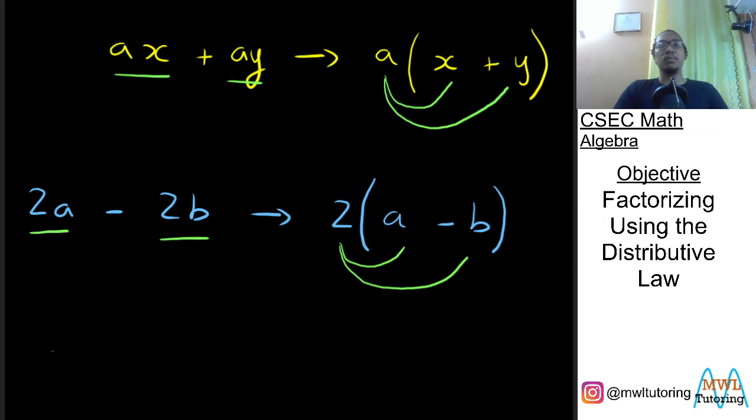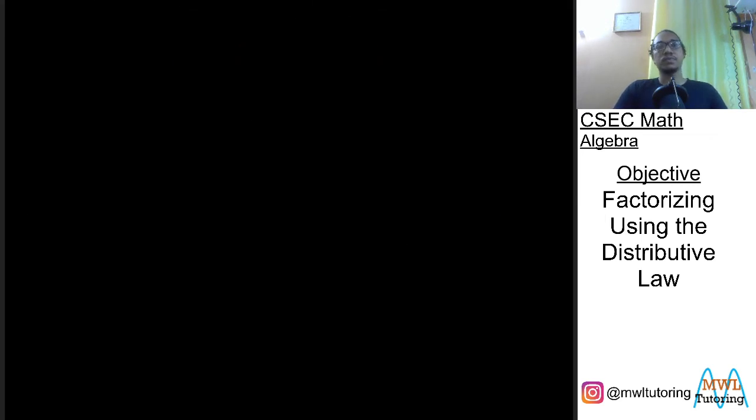Let's look at a more involved example. So let's say I have something like this: 64a squared minus 8a. And I want to factorize this.